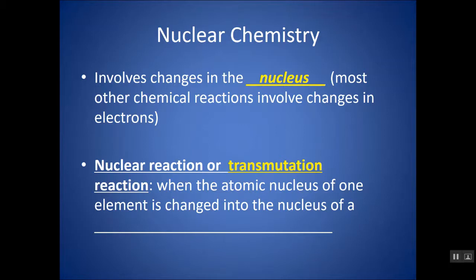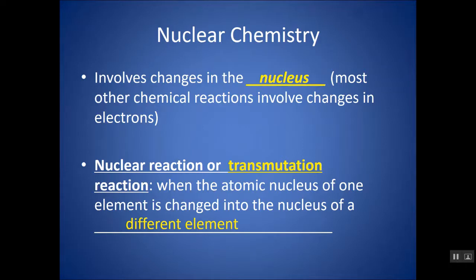Another way of calling a nuclear reaction — when the nucleus changes — is calling it a transmutation reaction. Transmutation is used because in these nuclear reactions, if you are changing the nucleus, so if you are changing the number of protons, you will be changing elements into different elements. You might end up with carbon as a reactant and oxygen as a product, and you will not have the same elements on either side of your reaction.